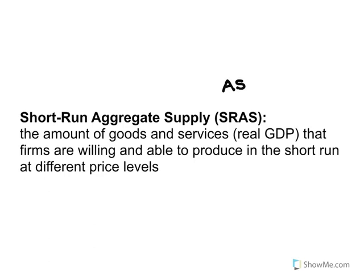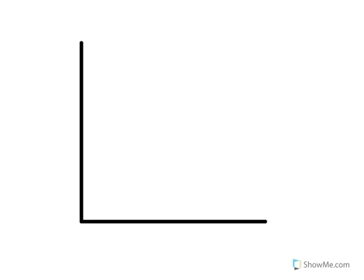When we bring in long-run aggregate supply in the next video, you'll get the best understanding of the difference between short-run and long-run in terms of aggregate supply. But let's keep going by drawing the short-run aggregate supply curve. The labels on the graph are going to be just like they were with aggregate demand: Y for real GDP and PL for the price level. Just like the market supply curve for one good or service, short-run aggregate supply is going to be an upward sloping curve, and we can immediately see a relationship between the price level and real GDP supplied.